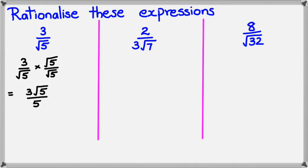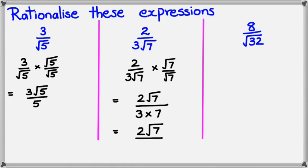So if you look at the middle example, I have 2 divided by 3 times square root of 7. So I'm going to be multiplying it by square root of 7 divided by square root of 7. So if I multiply the two numerators together, I will get 2 square root of 7. And in the denominators here, I would get 3 multiplied by 7. And to simplify it further, I would simply have 2 square root of 7 divided by 21.